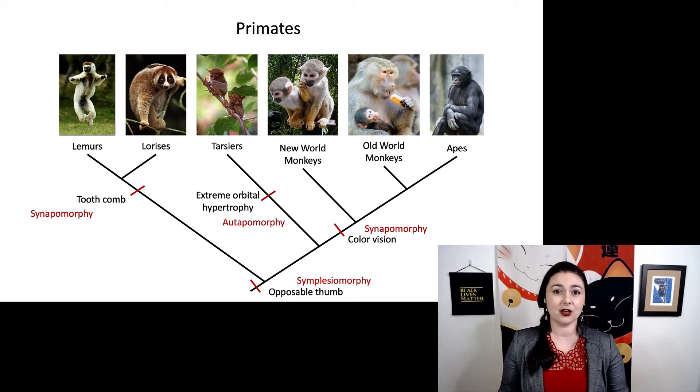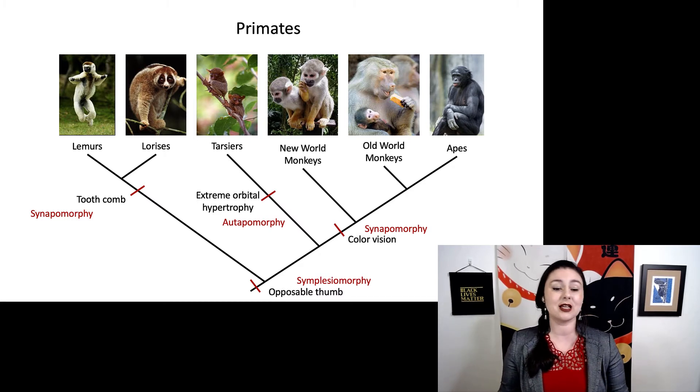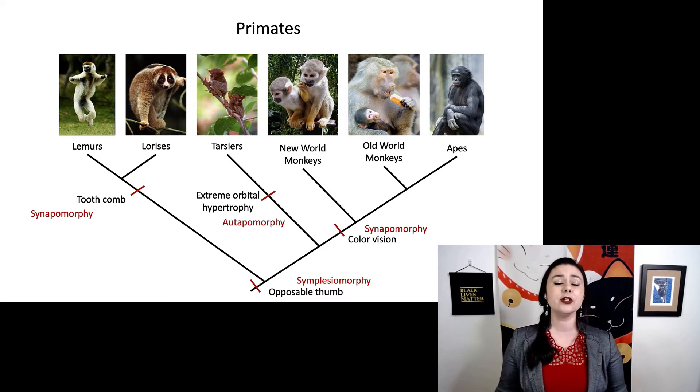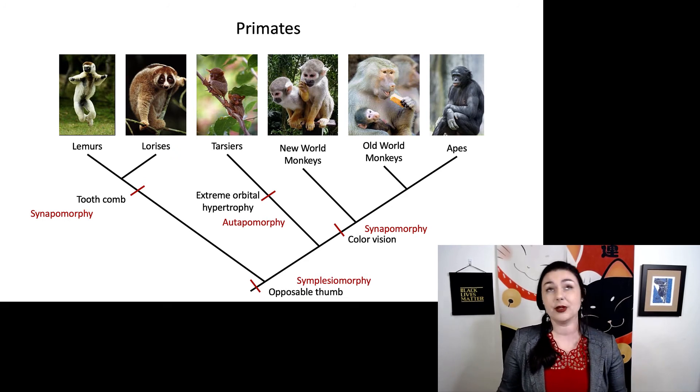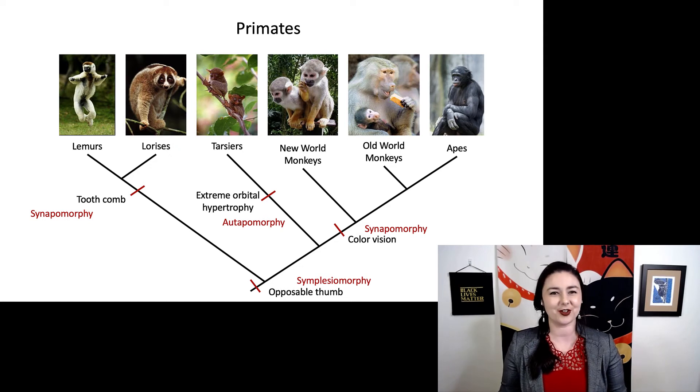One thing to point out, though, to make things even more complicated, is whether something is a synapomorphy or a symplesiomorphy is relative. So here we are looking at this tree and looking at primates and all primates have this opposable thumb. So for primates, that is a symplesiomorphy. But if we were to compare primates to a different group, even just a different group of mammals comparing primates to cats, well, cats don't have an opposable thumb. So in that instance, now our opposable thumb becomes a synapomorphy. So these are relative terms, and you need to pay attention to the level of comparison you are making.